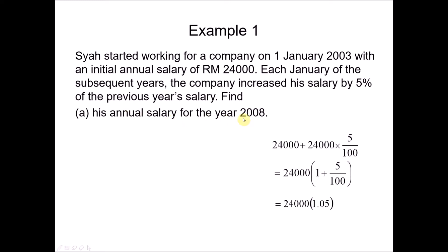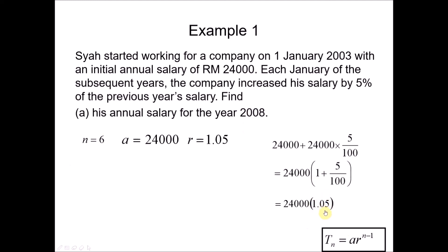To find the annual salary for the year 2008, we use T_n since we want only one year. From 2003 (T1) to 2008 (T6), n = 6. With a = 24,000 and r = 1.05, substituting into T_n = a·r^(n-1) gives T6 = 24,000 × (1.05)^5. Calculating this gives an annual salary of $27,153.80.